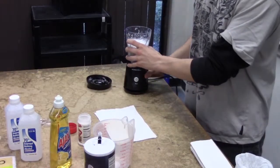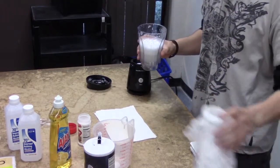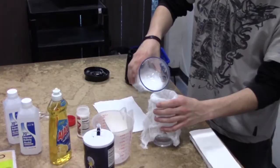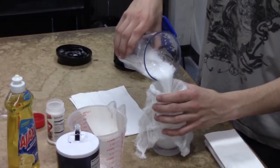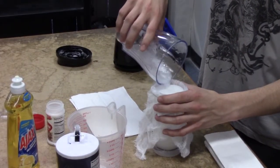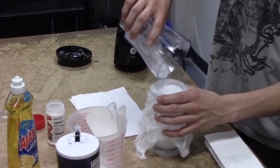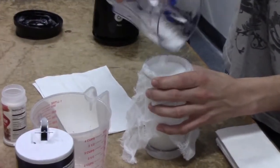Now that we have a good amount of onion pulp, we're going to pour it through our cheesecloth filter and into the cup. Make sure to get all of it in there. Good.